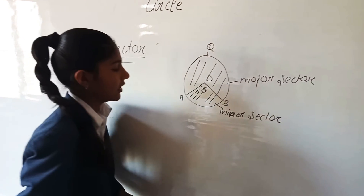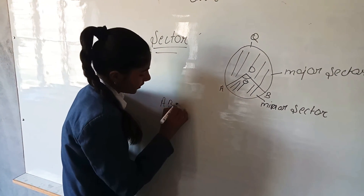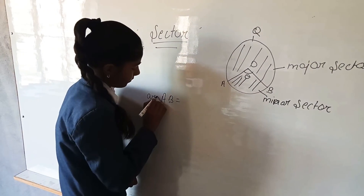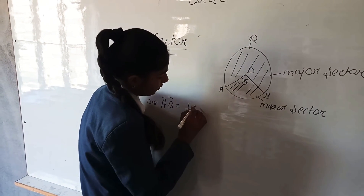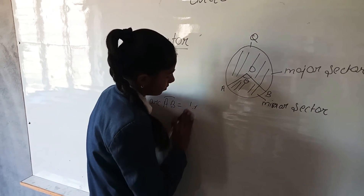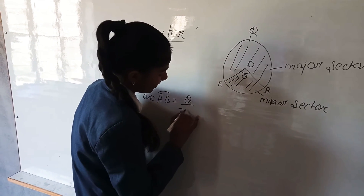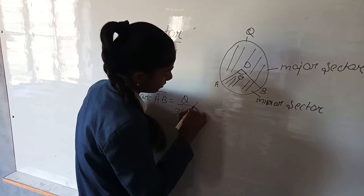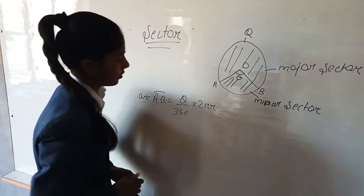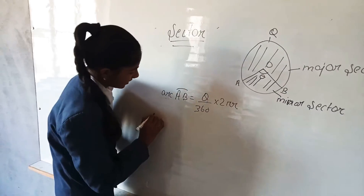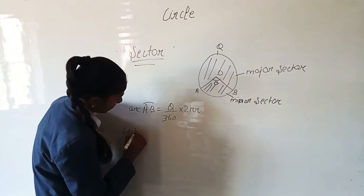We can find the length of arc AB. The arc length of AB is (θ/360) × 2πr. And the area of the minor sector AOB is (θ/360) × πr².